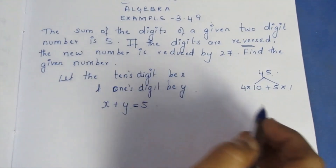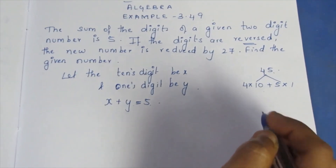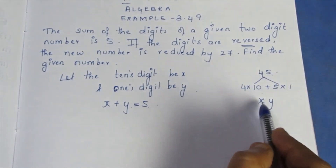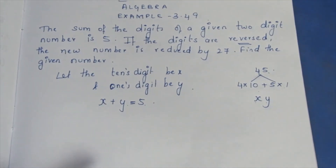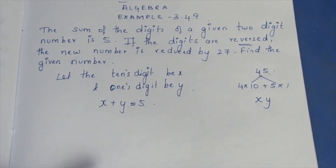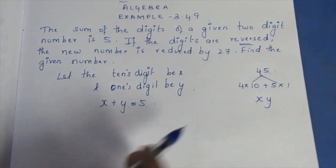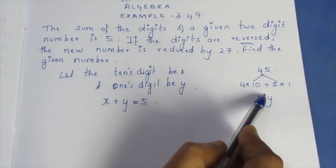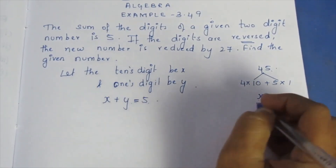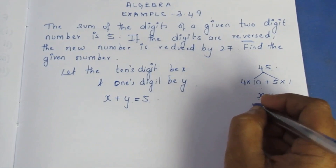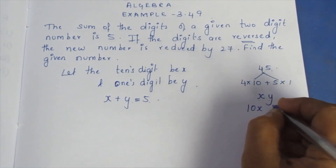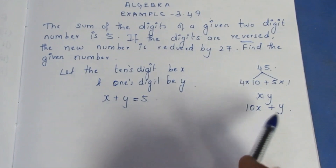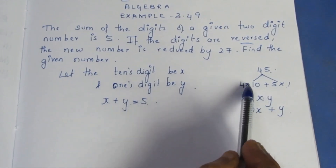For a two-digit number, the tens digit is x and the ones digit is y. How do we write this? The tens digit x contributes 10×x, so we write 10x. This represents the tens place.